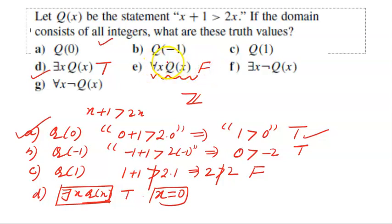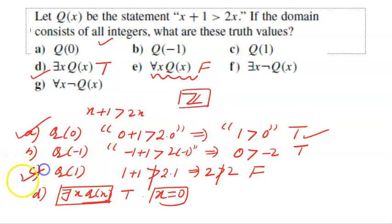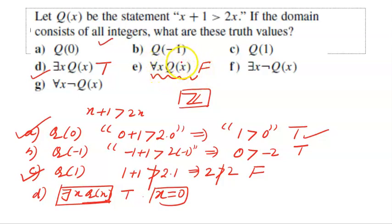For ∀x Q(x) to be true, Q(x) must be true for every value of x in the set of integers. But we already saw that Q(1) is false, meaning Q(x) is not true for every value of x. So ∀x Q(x) is a false statement.